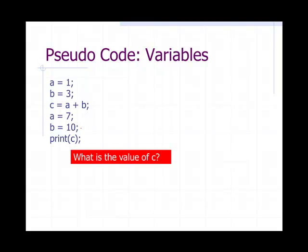Now next question, what is C? So I just added two more instructions. I said 7 is assigned to A, 10 is assigned to B. Print C. Now most people would say that this is equal to 17, but that would be wrong because C is actually still equal to 4. Why is that the case?